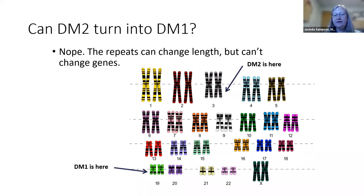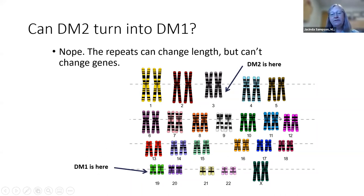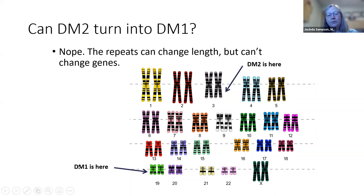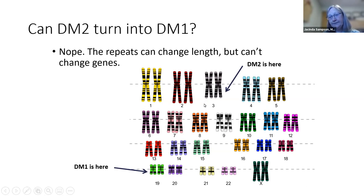Many people ask if myotonic dystrophy type 2 can turn into type 1 — no, it can't. They are totally different genes in completely different locations. DM1 is on chromosome 19 and is not on the sex chromosome, so it affects both men and women equally. DM2 is on chromosome 3. Different genes, different locations — you cannot turn one into the other.